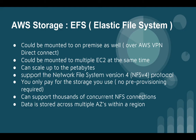EFS can support thousands of concurrent NFS connections and data is stored across multiple availability zones. EFS is a storage service for Amazon EC2 — it's easy to use and provides a simple interface that allows you to create and configure file systems quickly. With Amazon EFS, storage capacity is elastic, growing and shrinking automatically as you add and remove files, so your applications always have the storage they need.